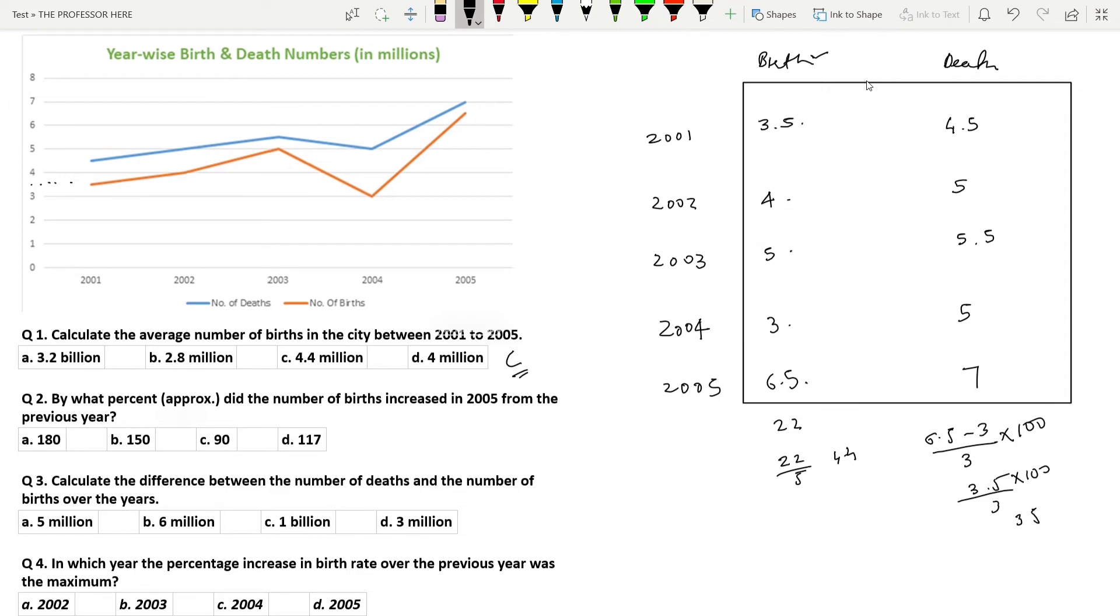3.5 divided by 3: 1, 1, 2, 0, 6, 2, 0, 6, 6, 6. So the answer is approximately option D, 117.